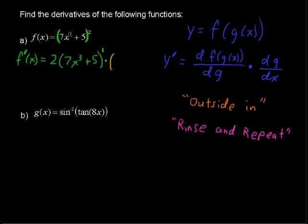And then multiplied by what I have left is to take the derivative of the inside, and that is 3 times 7 is 21, and then times x to the second power, and then plus 0. I'll write that out in this step just to show, the derivative of 5 is just 0.